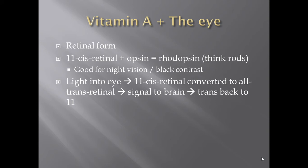Vitamin A in the eye is the big one. Vitamin A in the retinal form — you have 11-cis retinal, meaning there's an 11-cis bond at the retinal molecule. That combines with opsin to form rhodopsin. Rhodopsin is found in the rods of your eyes. Black and white vision is going to be rods; rods have rhodopsin. The 11-cis form is excellent for seeing in the dark — black contrast, rods, rhodopsin.